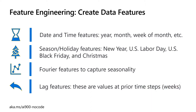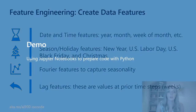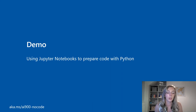Finally, lag features are really important — the prior week's data always affects what's happening this week in retail. Having those prior weeks within each row of experience for the machine learning model will be incredibly important. So let me take you through using Jupyter notebooks and Python code what some of this pre-processing looks like.